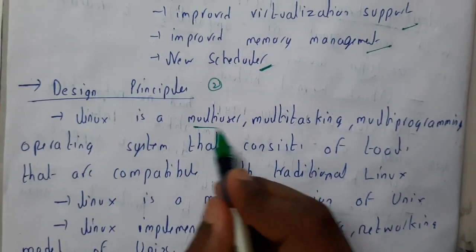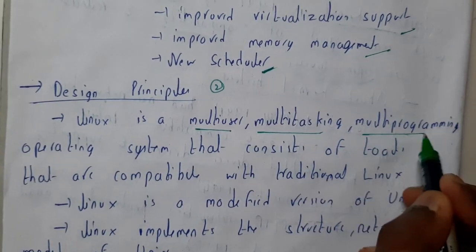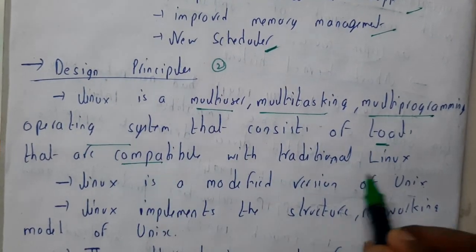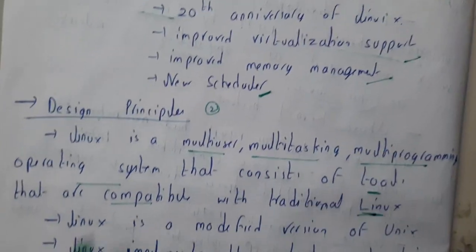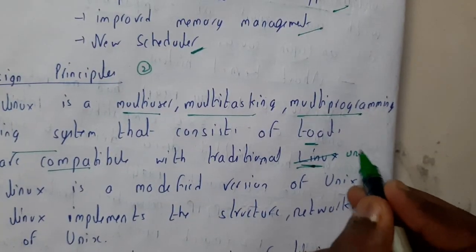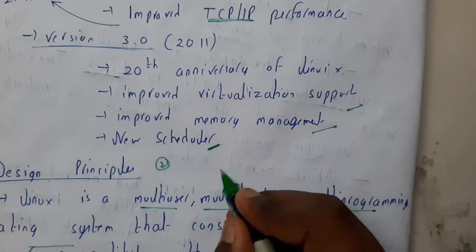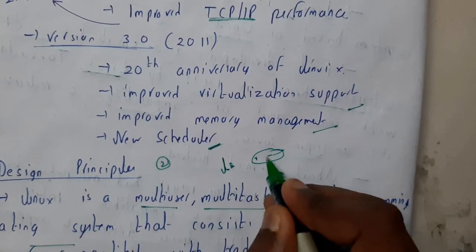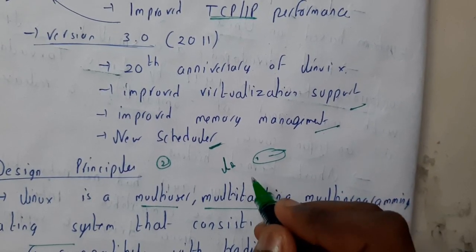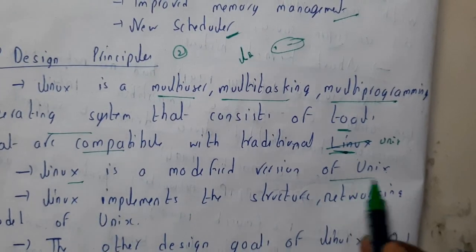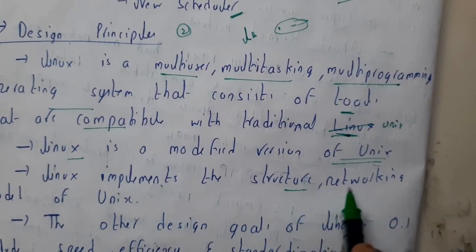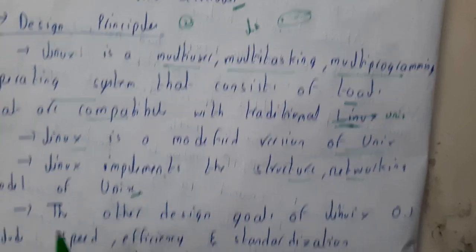Linux is a multi-user, multitasking, multi-programming operating system that consists of tools which are traditionally compatible with Unix. Basically, everything in Linux — almost 70 to 80 percent — consists of all the properties of Unix. Everything was imported to Linux, and we can say Linux is a modified version of Unix. Linux implemented the structures and networking models of Unix itself.